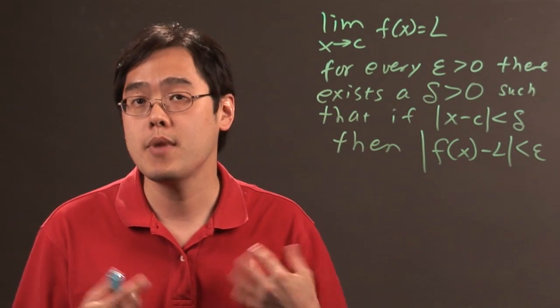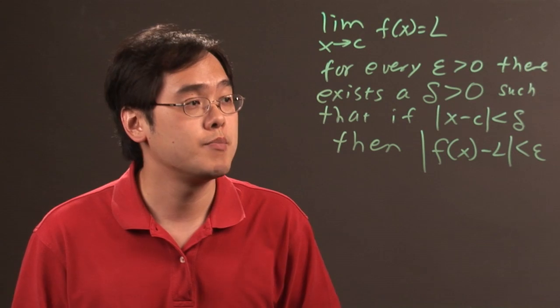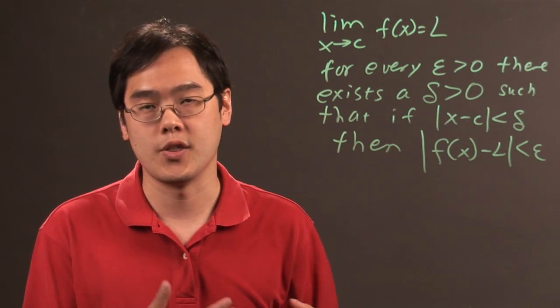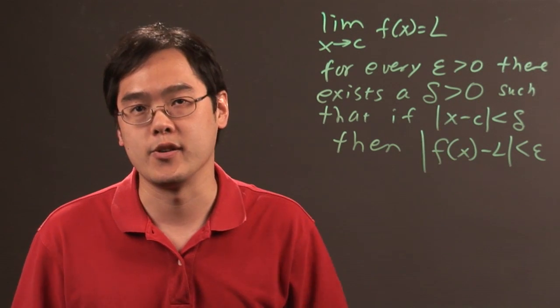Are delta and epsilon going to be the same? Not necessarily. They could be. But what they're basically telling you here is that if a limit exists, then the distances between the x coordinates and the y coordinates and their respective values would be very, very small.